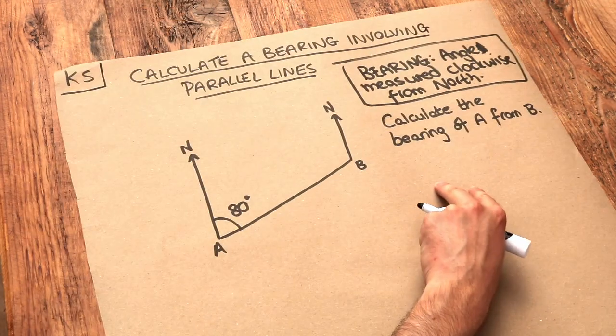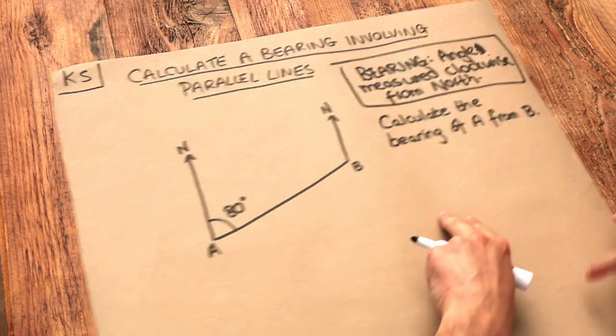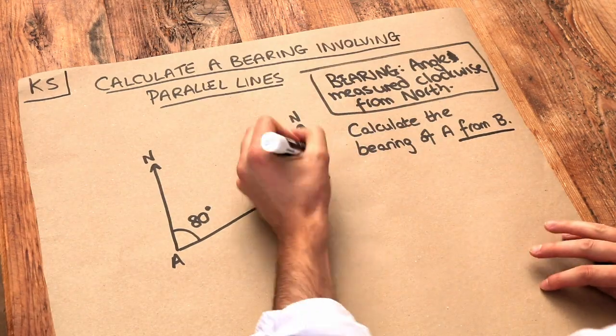So let's try and identify the angle we're looking for here. We want to calculate the bearing of A from B. Now if it says the bearing is from B, that means you're measuring the angle at B.